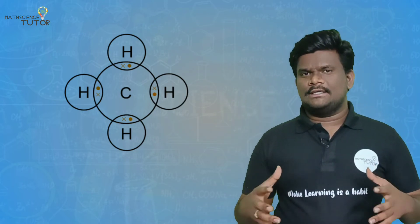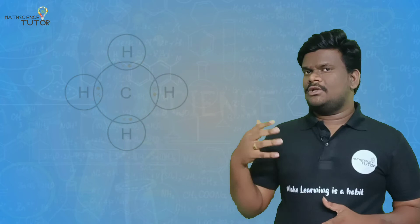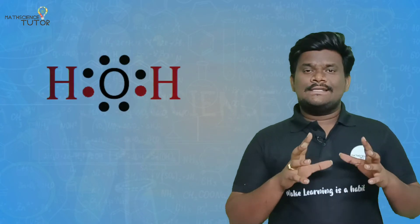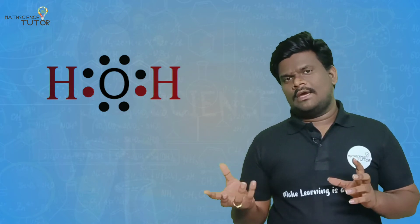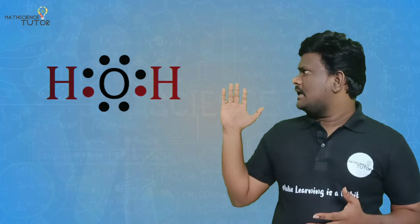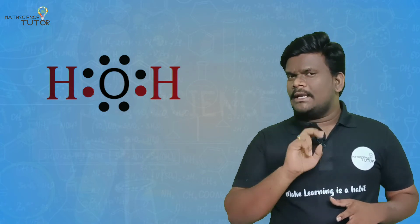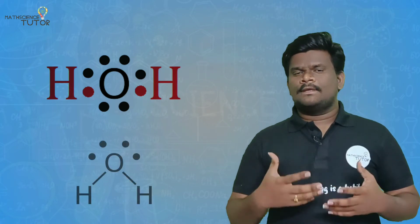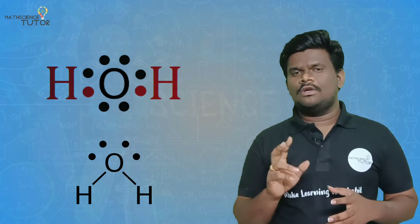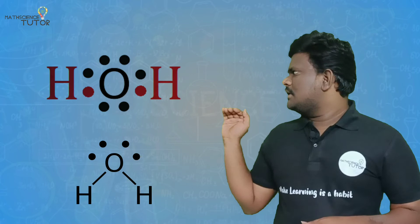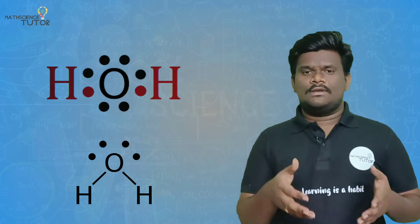This is the Lewis dot structure for the methane molecule. Coming to the water molecule: H2O contains oxygen and two hydrogens. The two hydrogen atoms contain only one electron each. Oxygen's electronic configuration is 2,6 — so the outermost shell has six electrons. Each hydrogen needs only one electron to get duplet stability, and oxygen needs two electrons to get octet stability.